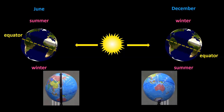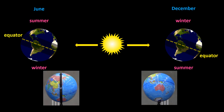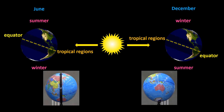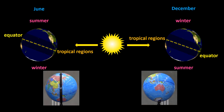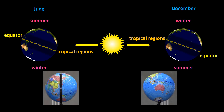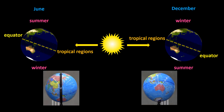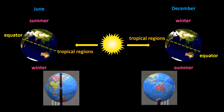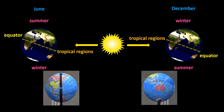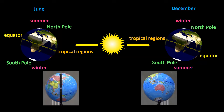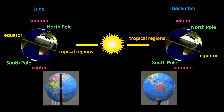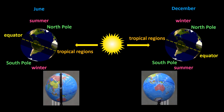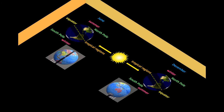Regions near the equator, which are called tropical regions, are hot all year round because of the more direct angle that the Sun strikes those regions. And the poles are always cold, once again because of the angle that sunlight strikes them.